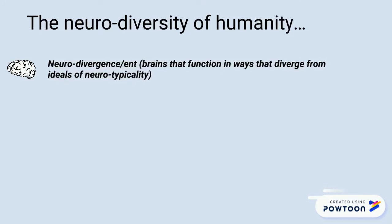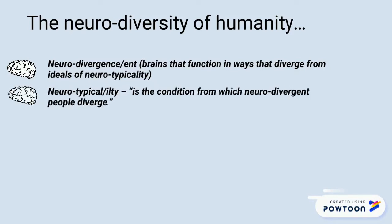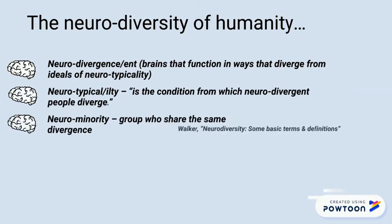Within this paradigm, those whose behaviour and thus brains function in ways that diverge from ideals of neurotypicality are considered neurodivergent, where neurotypicality is the condition from which neurodivergent people diverge.